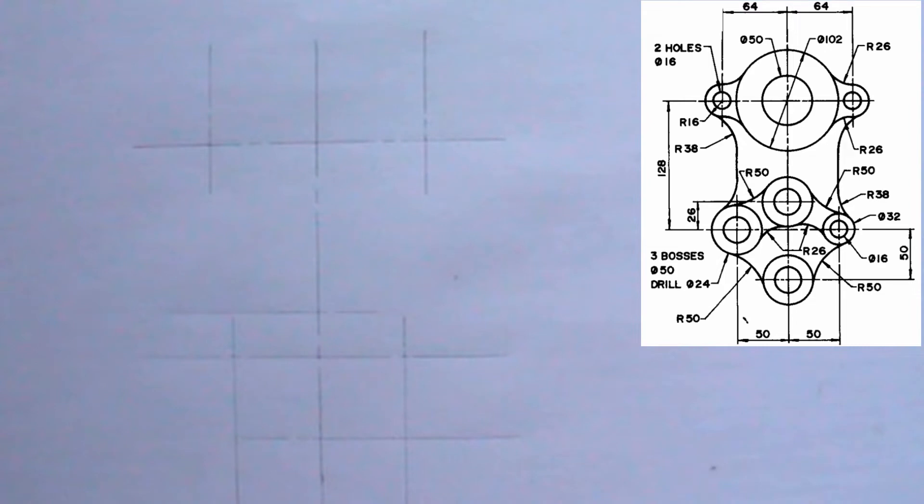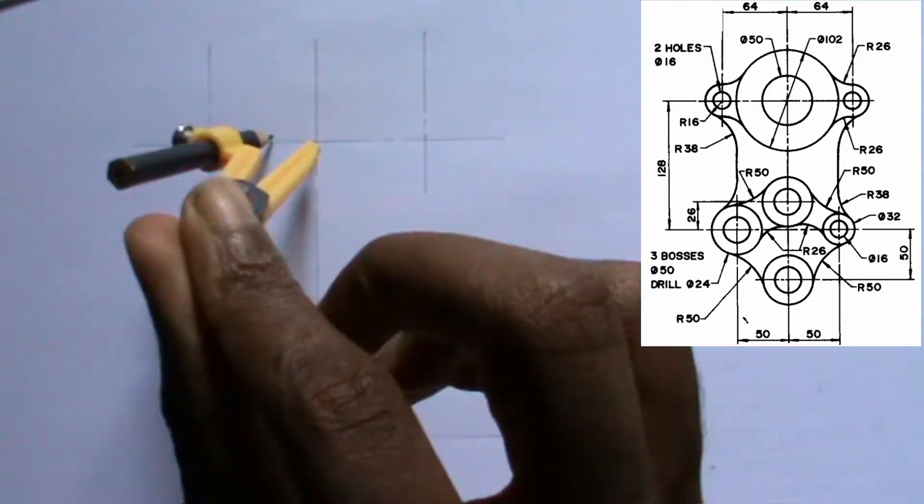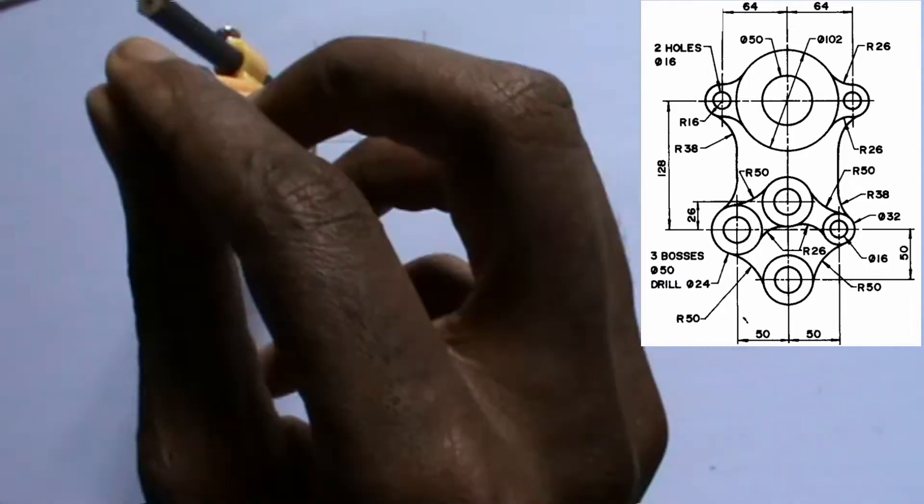Now it is time to draw circles. I will draw circles on specific points using specific radius as indicated above.